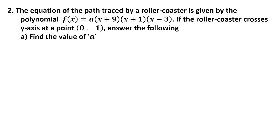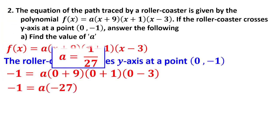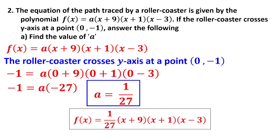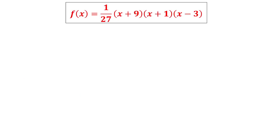Question number 2: Equation of the path traced by the roller coaster is given by f(x). As the roller coaster crosses the y-axis, the function should be satisfied by this point. Substituting, I am getting the value of A as 1/27. Now the function is 1/27 times (x+9)(x+1)(x-3).